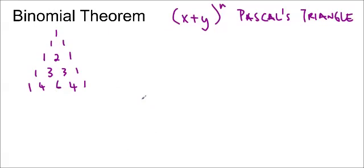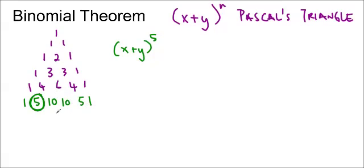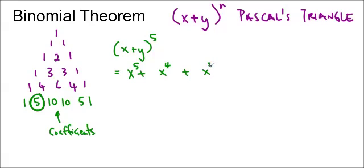Binomial theorem says that if I'm going to expand something like x plus y to the 5, then I want to use the fifth row of Pascal's triangle — the one that starts with a 5. So this row matches the 5, and these are going to be the coefficients of my expanded polynomial. For the x's, I'm going to descend: x to the 5, x to the 4, x to the 3, x to the 2, x to the 1, and x to the 0.